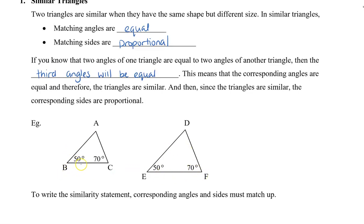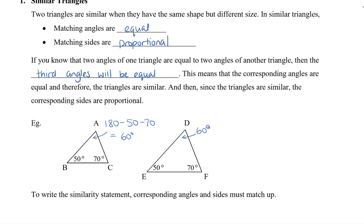We know that the two bottom angles are 50 and 70 respectively. So I can find angle A up here by taking 180 degrees, because I know that all three of these angles add up to 180. And if I subtract 50 and 70, I can find angle A, which will be 60 degrees. Now since angle D has the same properties, because we know the bottom two are 50 and 70, angle D must also be 60 degrees.